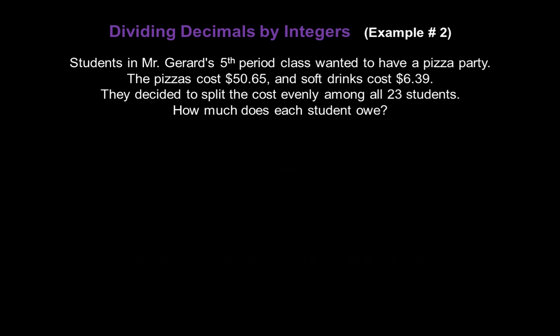Now let's wrap this up with a word problem. Students in Mr. Girard's fifth period class wanted to have a pizza party. The pizzas cost $50.65 and soft drinks cost $6.39.